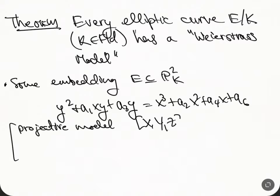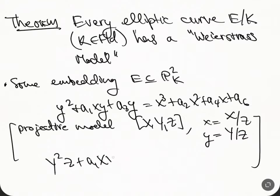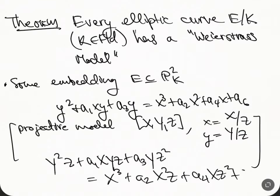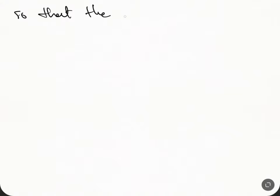A Weierstrass model means we're going to have some embedding of E into P²_k, so it's a plane curve with the equation y² + a₁xy + a₃y = x³ + a₂x² + a₄x + a₆. In the projective model we have homogeneous coordinates X, Y, Z, and we let x = X/Z and y = Y/Z, then we make everything degree 3 by inserting Z's where needed: a₂X²Z + a₄XZ² + a₆Z³. So the marked point becomes the point at infinity.